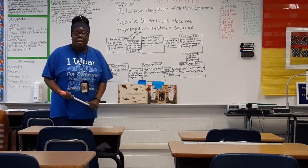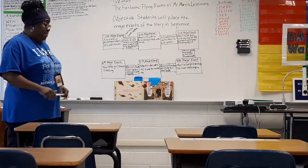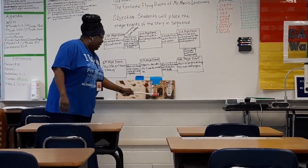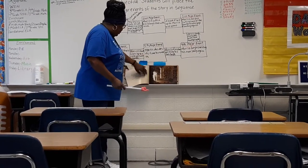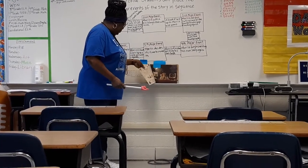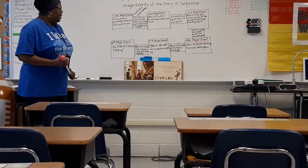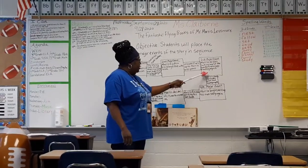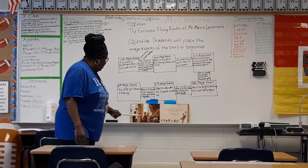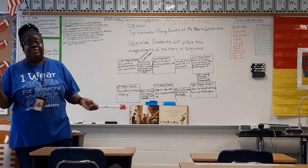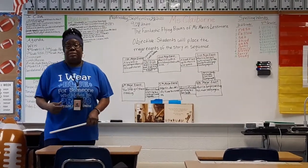Now we're up to our second major event: Morris finds a building filled with books. This is Morris going into that building. As you can see, Morris is still gray. A book will fly up to Morris and it lands on him. This leads us to our third major event — Morris is in the building now and we see that Morris has color. His color has come to life. He's full of color because he's in a place where there are a lot of books, and Morris likes to read.